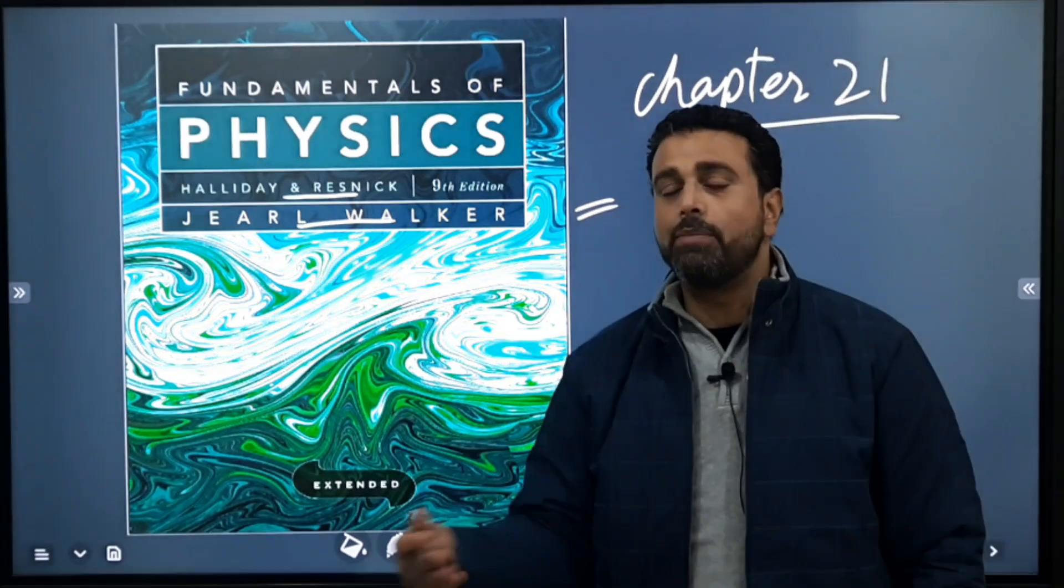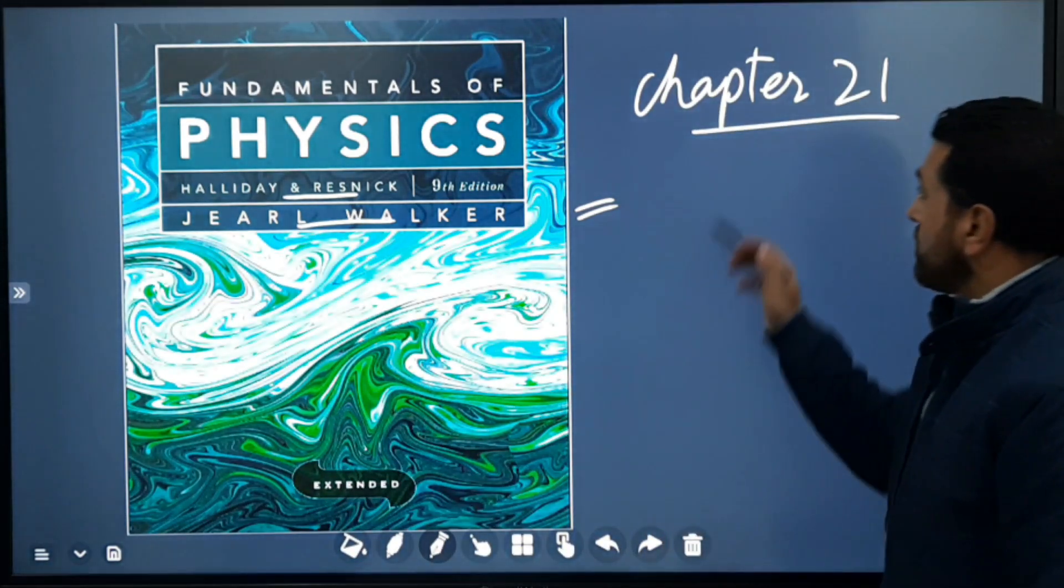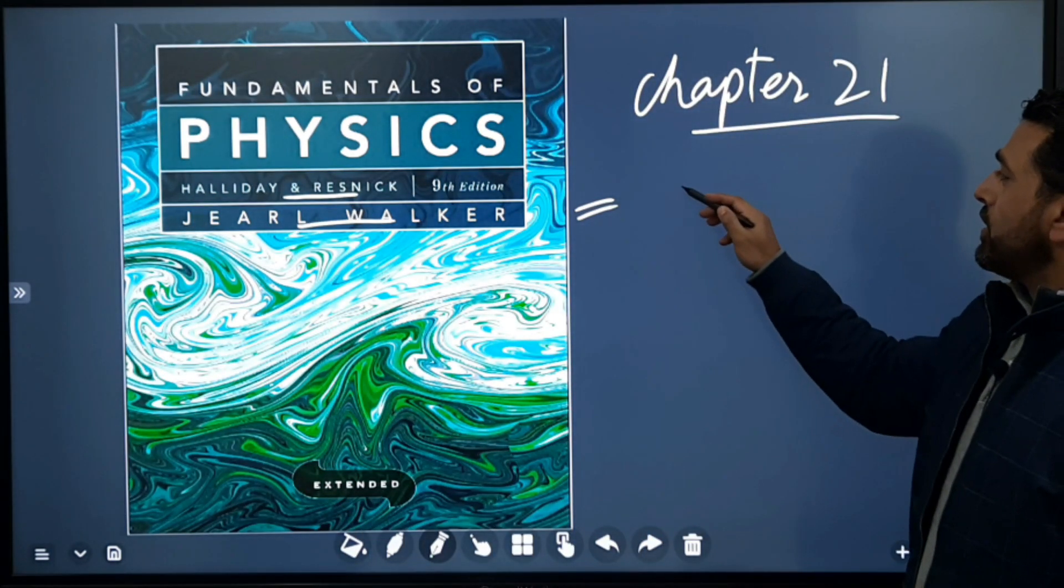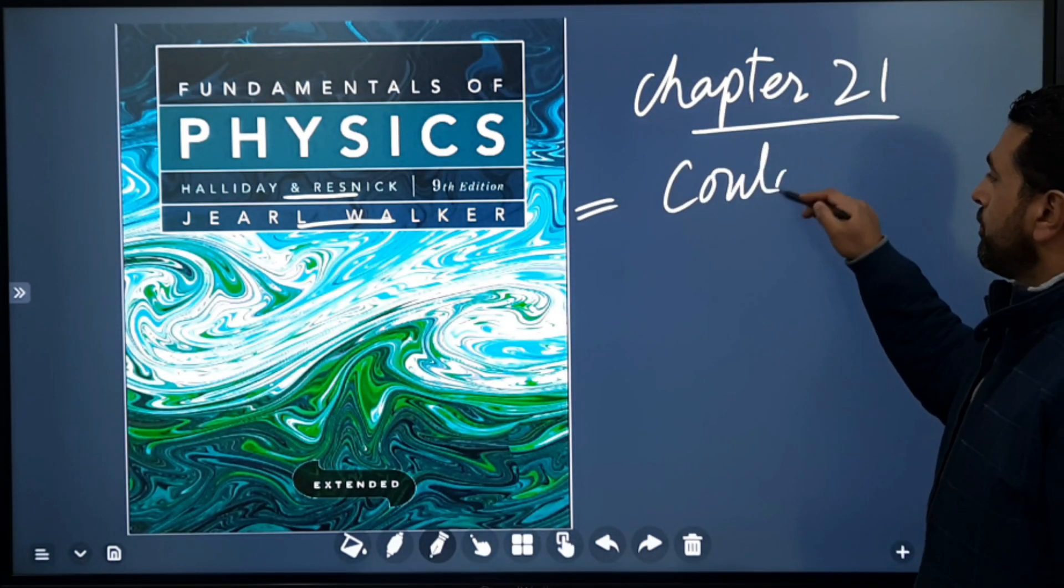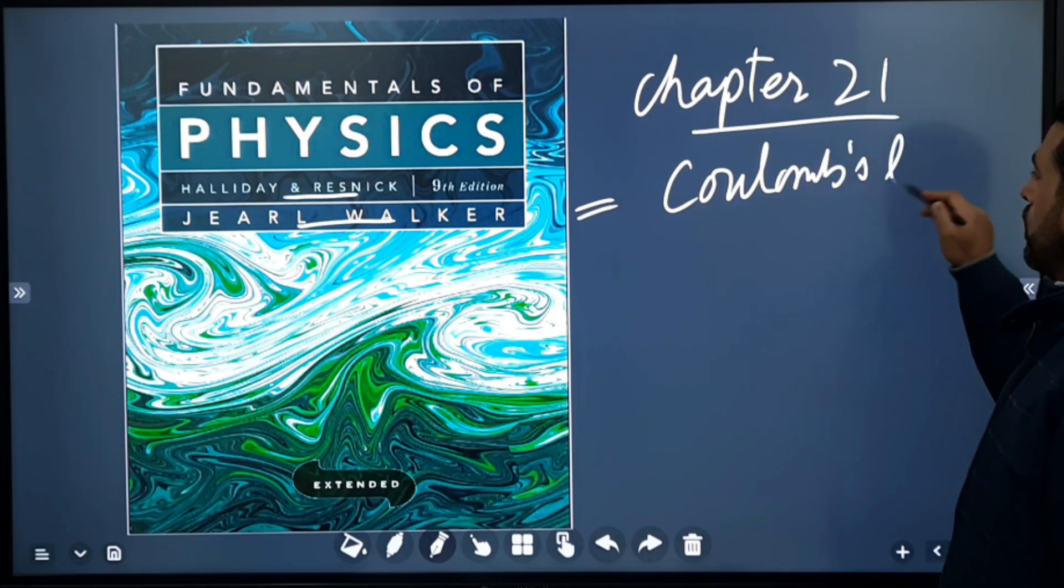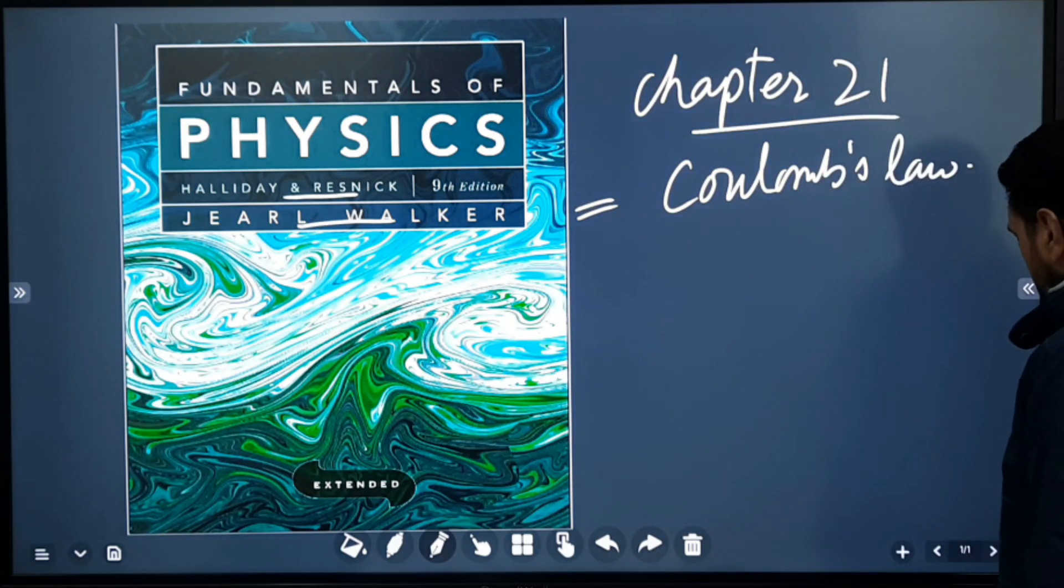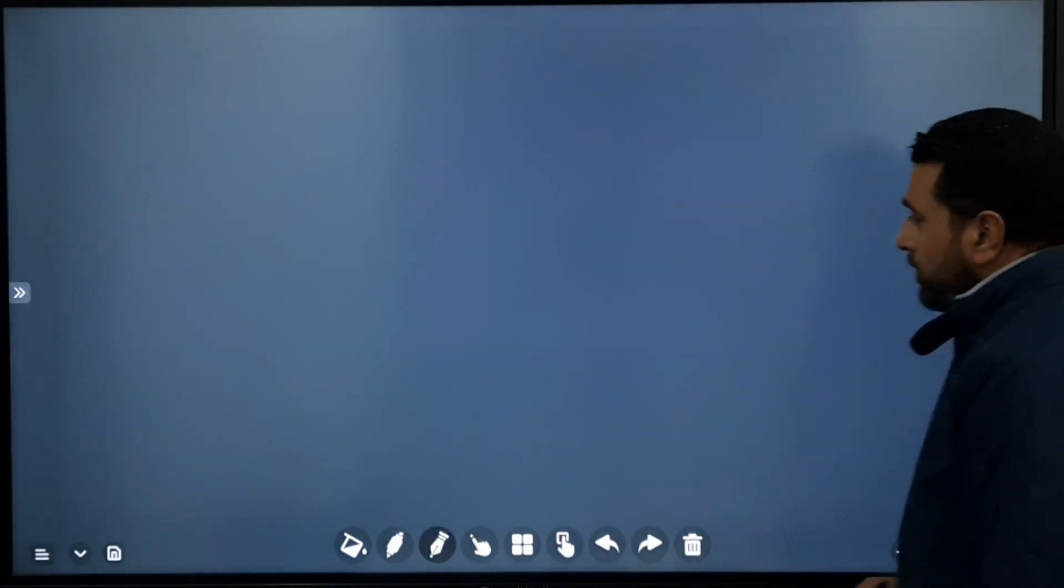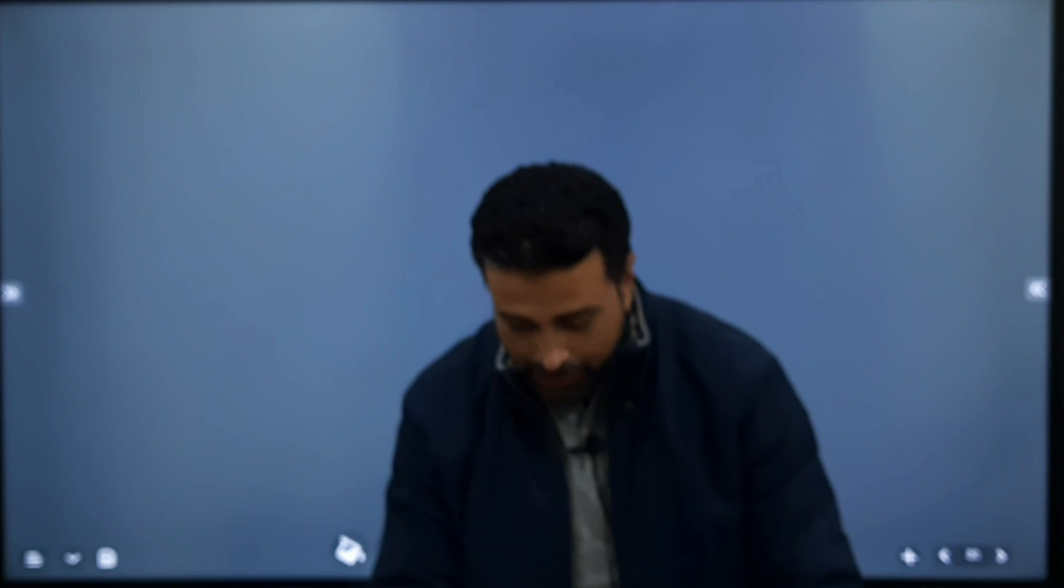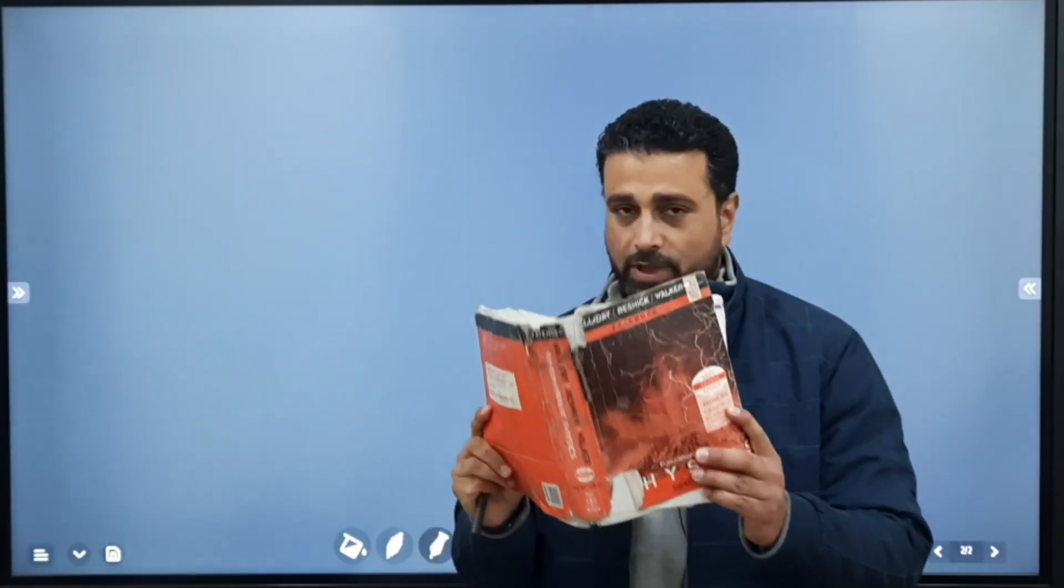I'm planning to solve first electricity and magnetism part of this chapter. So I'm starting with Chapter 21, which is Coulomb's Law. Without wasting time, let's move on. I'll read out the question. I'm using the eighth edition, by the way.